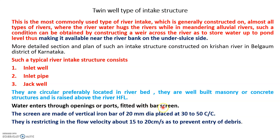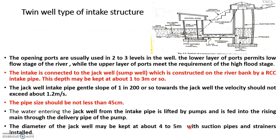Entry ports consist of screen bars placed at around 30 to 50 centimeters center-to-center spacing. The diameter of the bars is usually around 20 mm. The velocity is restricted to around 15 to 20 centimeters per second so that debris entering those wells is prevented.